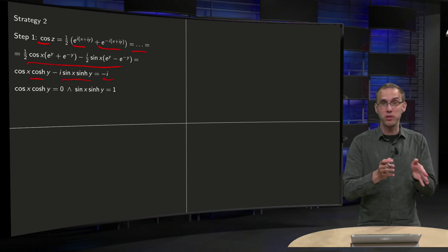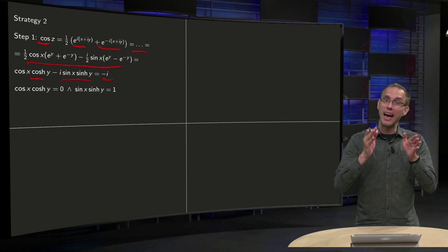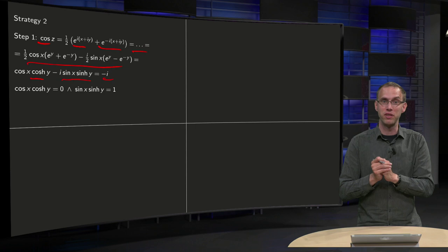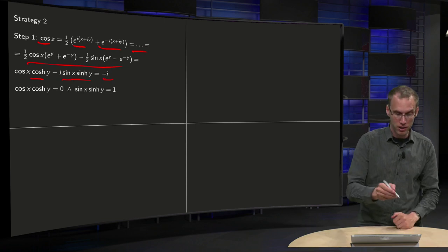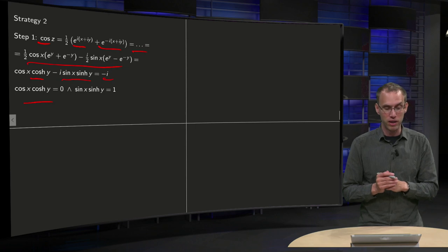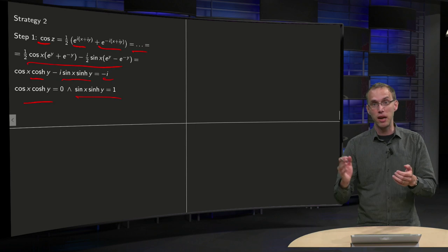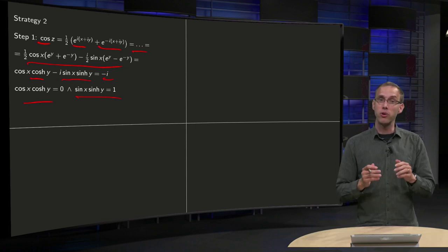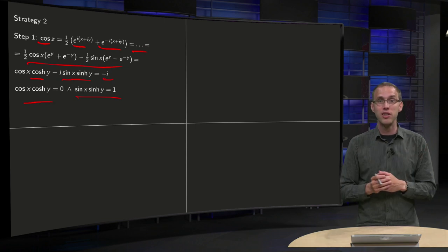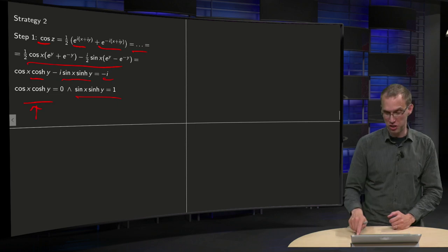Comparing left and right hand sides: the real part on the left must equal the real part on the right, and similarly for imaginary parts. Comparing real parts gives cos(x)·cosh(y) equals zero. Since cosh(y) is always greater than or equal to one, it is never zero, so cos(x) must equal zero.